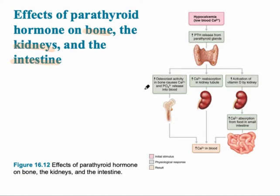When it acts on the bone, which is its primary source of calcium, it activates osteoclast activity in the bone, which causes the calcium and phosphates to be broken down and released out into the blood. The osteoclast breaks down the bone matrix.